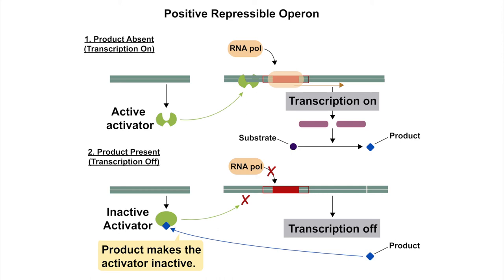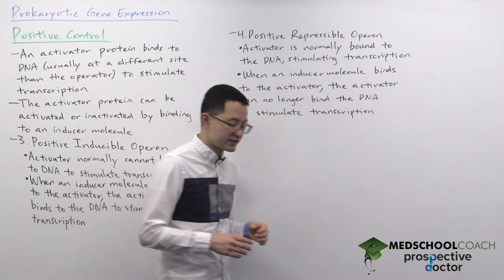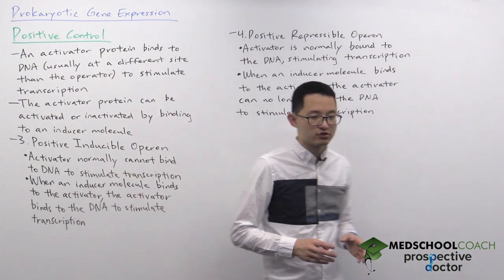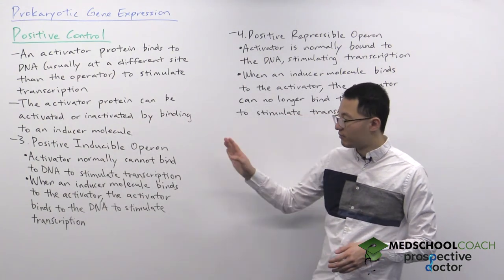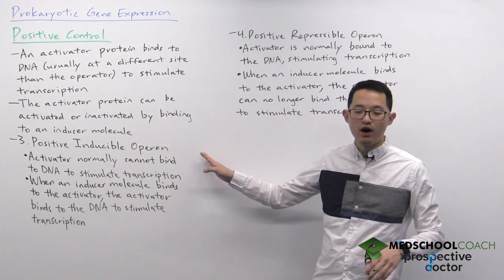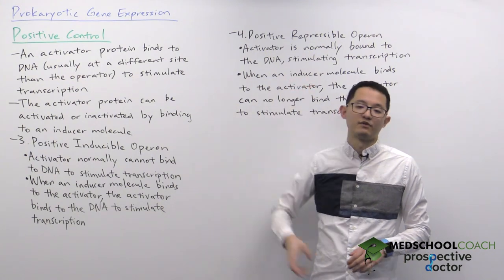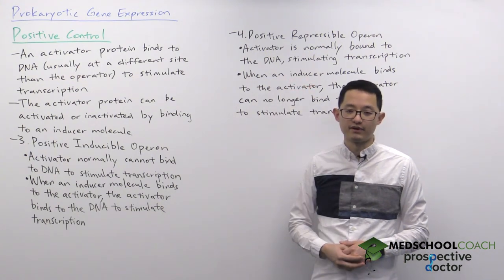When an inducer molecule is present, it binds to the activator protein. This prevents the activator protein from binding to the DNA and stops transcription. That's how positive control of operons works, through positive inducible operons as well as positive repressible operons.